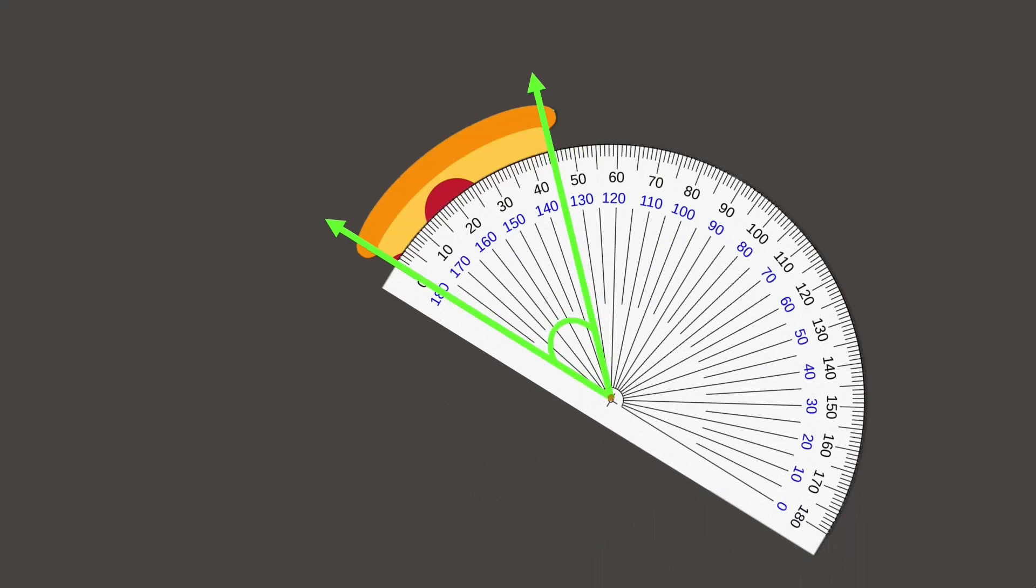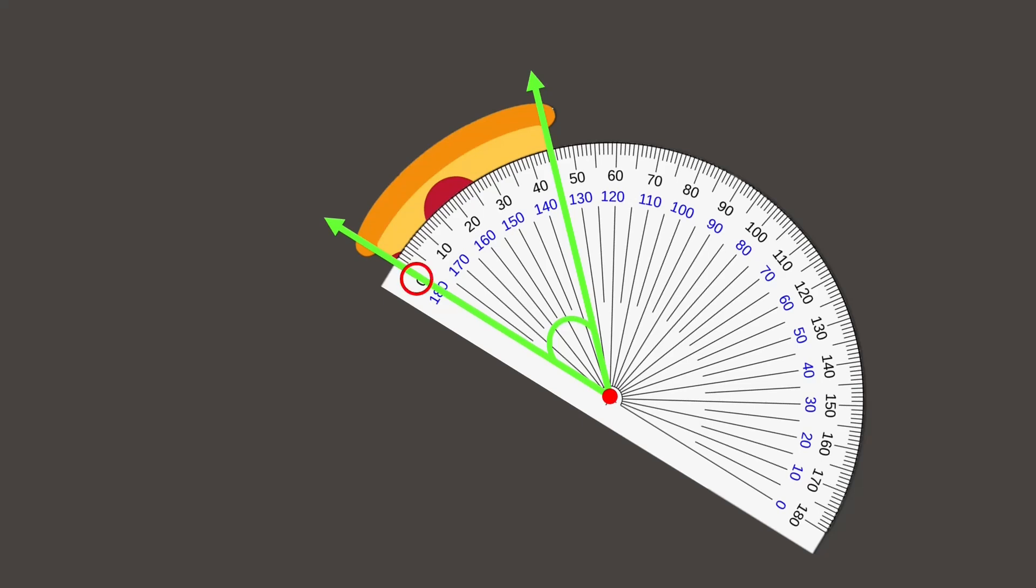First, here's an image of a slice of pizza. Let's measure its angle. Step 1: Make sure that the vertex of an angle is at the center point of the protractor, and that one arm is pointing at 0.